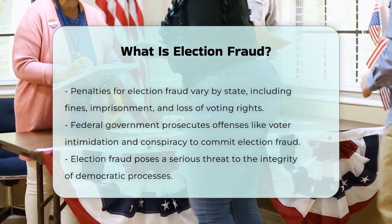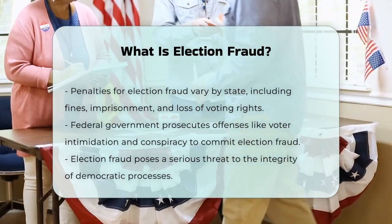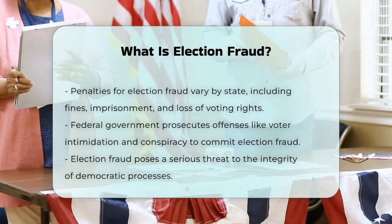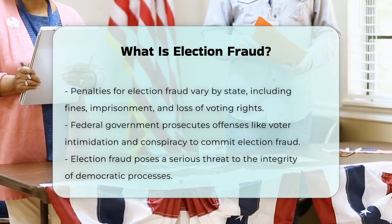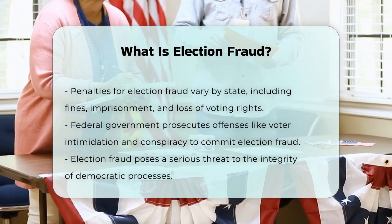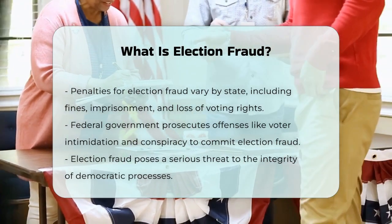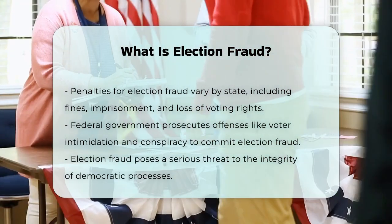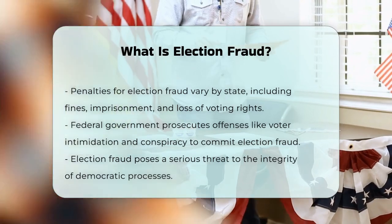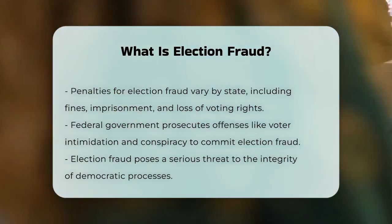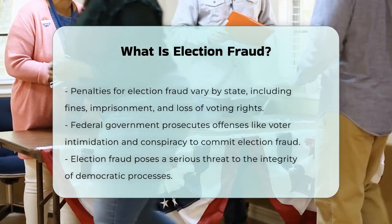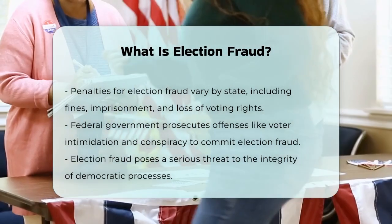At the federal level, the government prosecutes crimes such as voter intimidation, conspiracy to commit election fraud, and interference with the right to vote. In summary, election fraud is a complex issue that can take many forms, all aimed at illegally influencing election outcomes. It's a serious threat to the integrity of democratic processes and is addressed through various laws and penalties.